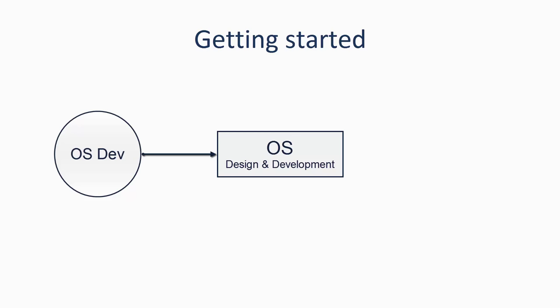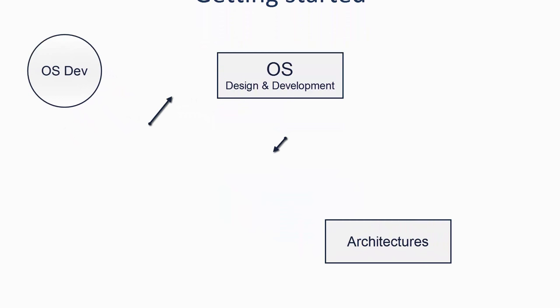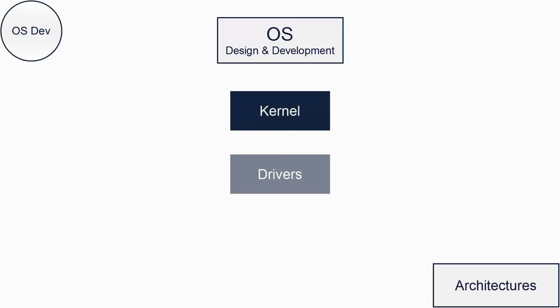So what is OS development? OS development is designing and programming an operating system for one or more architectures. An operating system is made up of three key parts: the kernel, some drivers, and some user applications.